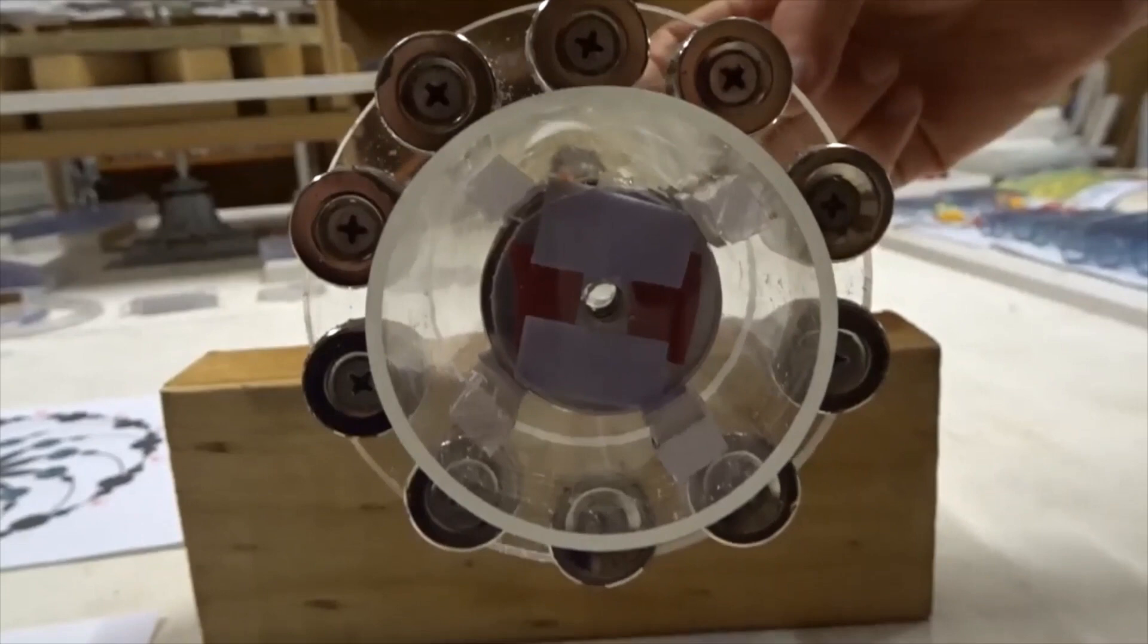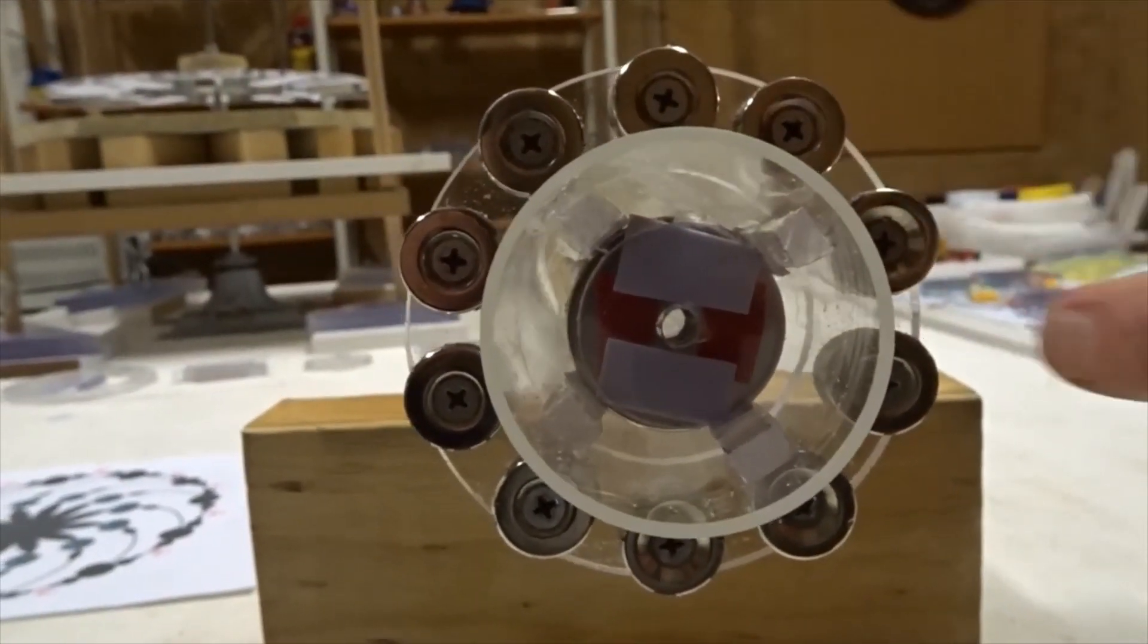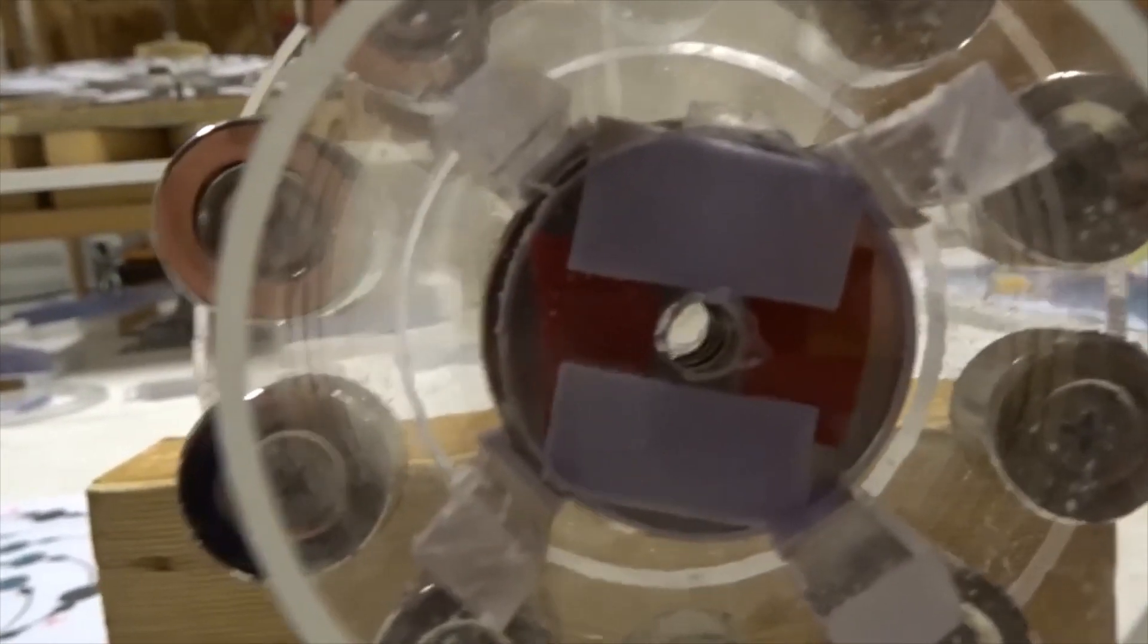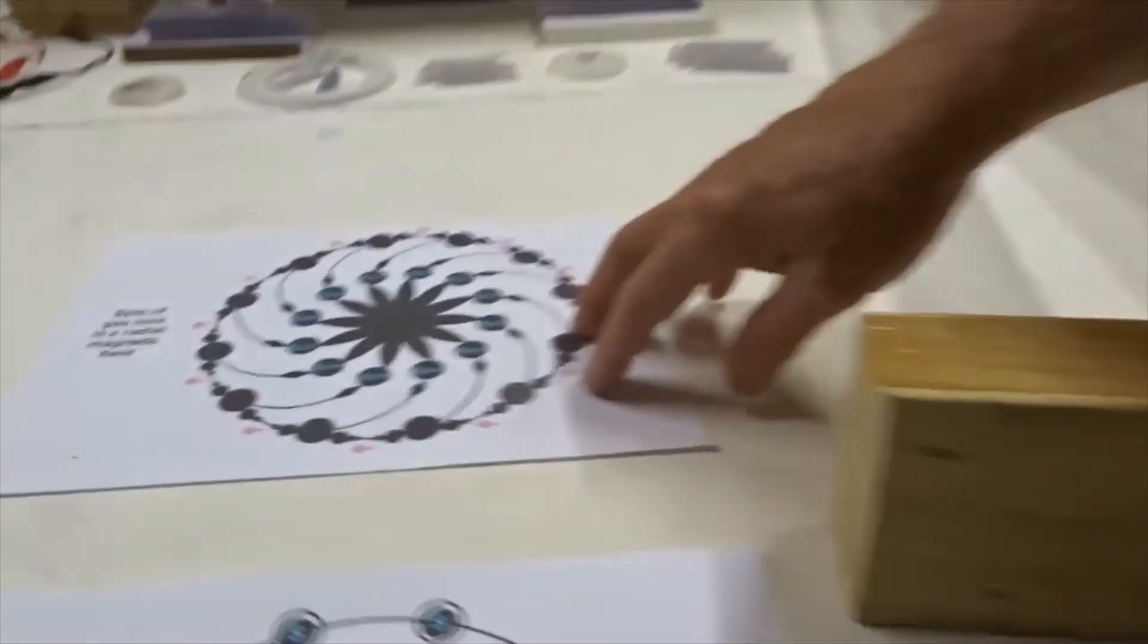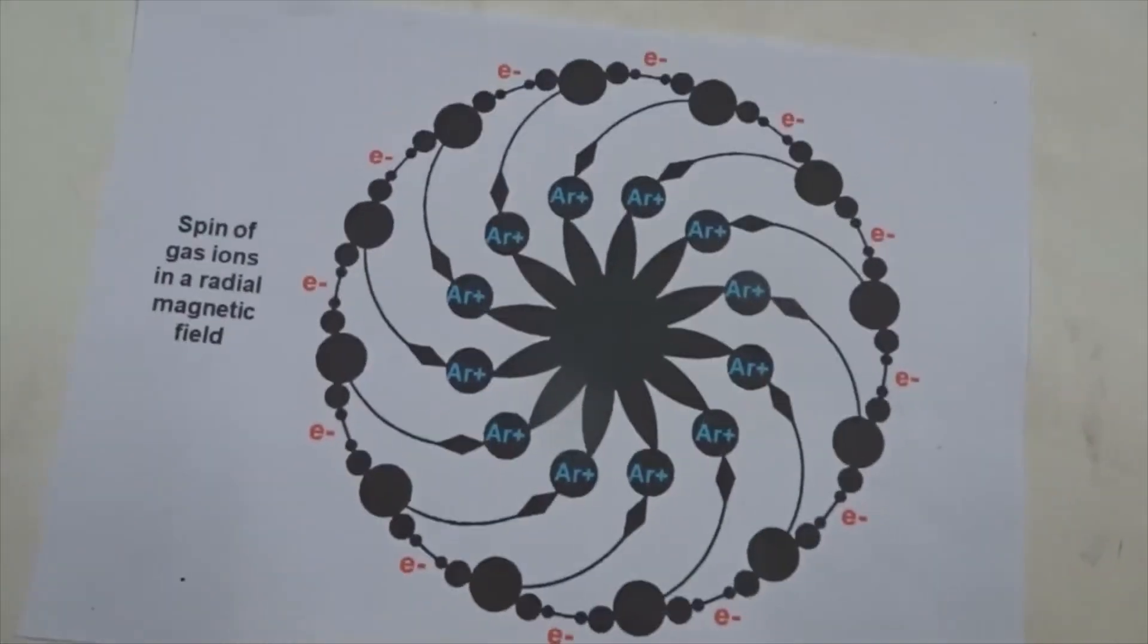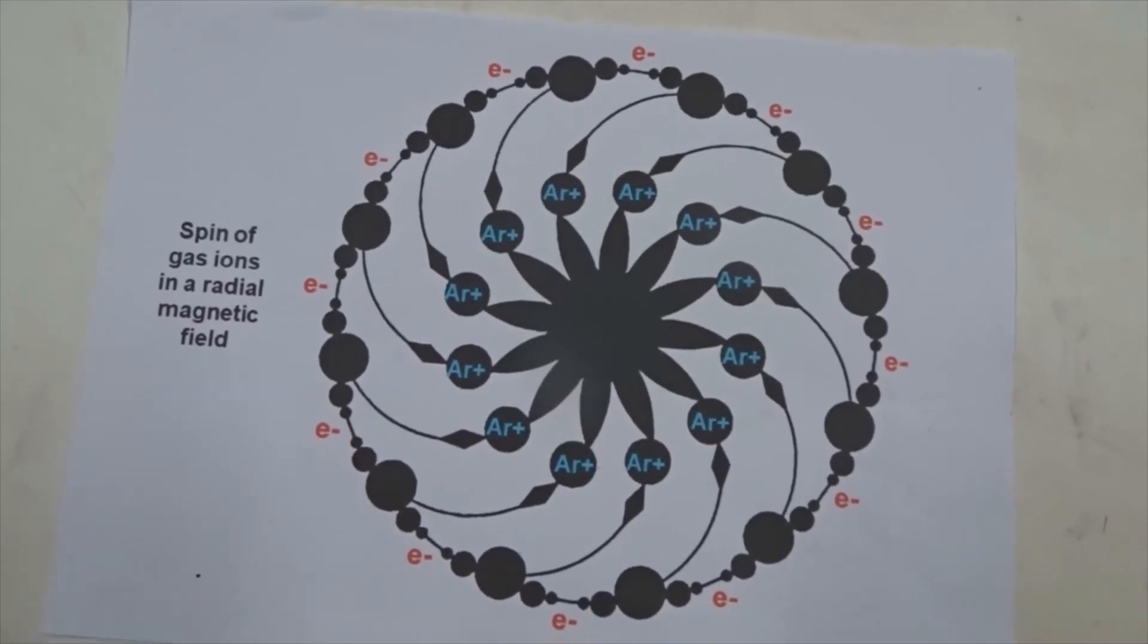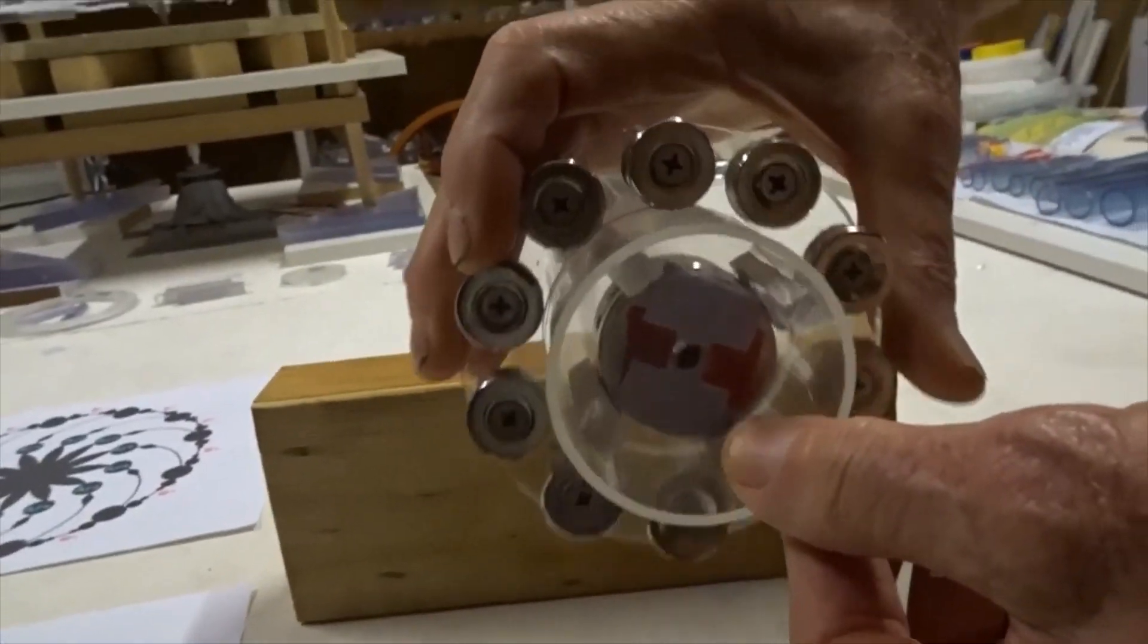And what's going to happen is we're going to have argon gas come through these holes between the outer ring of magnets and the inner ring. And when it gets ionized by electric charge, it'll start spinning very fast, like in this picture over here. The argon ions will go to the center, the electrons will stay on the outside. So that's step two, but I just wanted to document step one so everybody could see what we're working with.